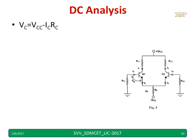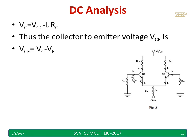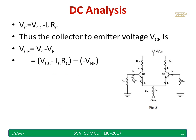Coming to the collector voltage, VC equals VCC minus IC·RC. Now for the collector-to-emitter voltage VCE, it is VC minus VE. We have written VCE equal to VCC minus IC·RC. The emitter voltage VE is approximately VBE because the RS1 drop is negligible — ideally RS1 equals 0. Hence VE equals VBE, and simplifying we get VCE equal to VCC plus VBE minus IC·RC.